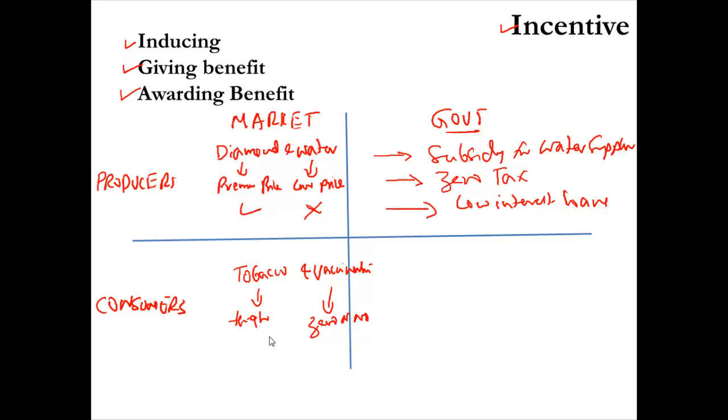The government thinks that this market incentive structure is not okay, therefore government interferes. Government imposes tax on sales of tobacco. Government also probably restricts distribution of tobacco; you cannot distribute tobacco near schools, in airports, in public places, in bus depots.